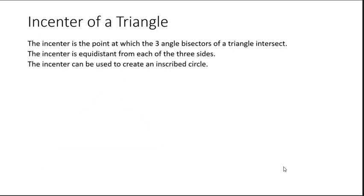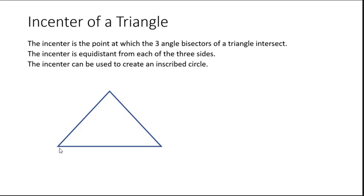What that means is we could use the incenter to create an inscribed circle. Here's a triangle. We create an angle bisector for the left angle — we construct it as shown in the previous part of the lesson — and we get a segment like this. Then we do that for the bottom right angle and construct that angle bisector. Then for the top angle, we again create an angle bisector using the compass and straight edge. Notice that all three angle bisectors intersect here at one point — that point is called the incenter.